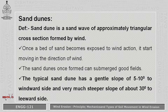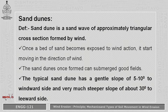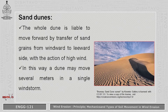Sand dunes are sand waves of approximately triangular shape. Once a bed of sand becomes exposed to the wind, it starts moving in the direction of the wind. Sand dunes, once formed, can submerge cultivated lands. An example of sand dunes is in Rajasthan. A typical sand dune has a gentle slope varying from 5 to 10 degrees on the windward side and a much steeper slope of up to 30 degrees on the leeward side. The whole dune moves forward by transport of sand grains from the windward to the leeward side.